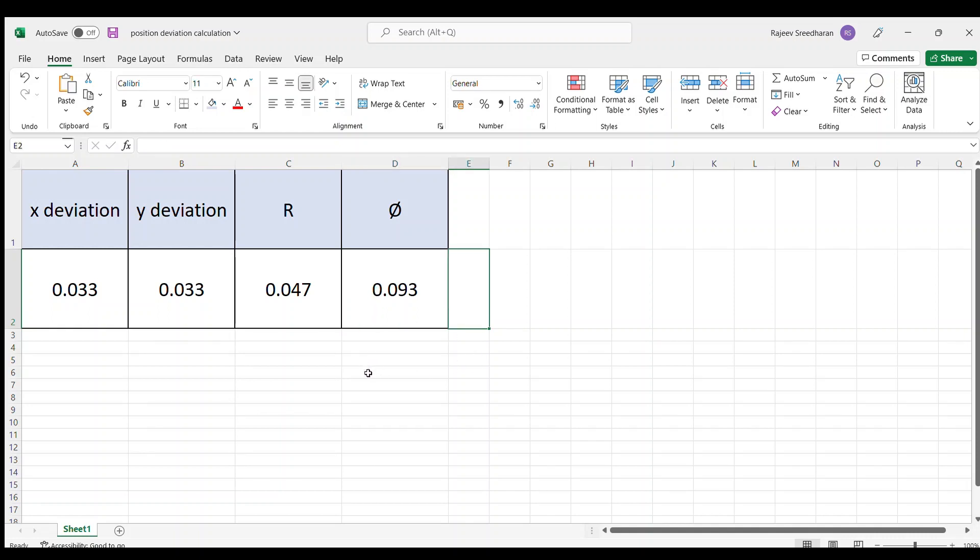I hope the calculation is very clear. With this, your understanding will be very clear on the diametrical tolerance allowed and how much you can go in x and y.